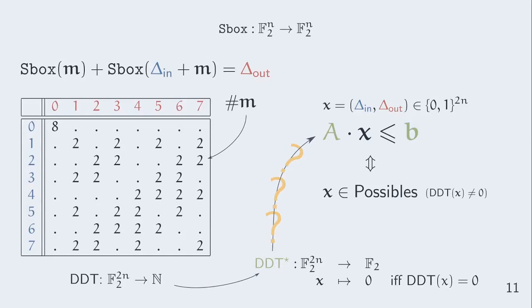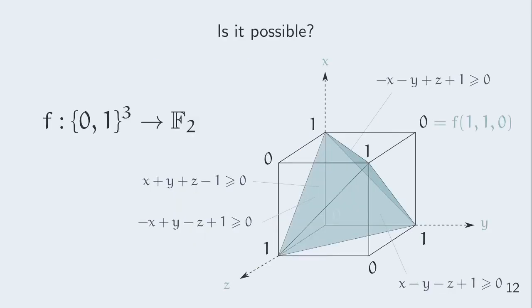Now the question is how can I derive a set of affine linear inequalities on binary variables x that is satisfied if and only if the two times n binary variables x model a possible transition. Please note that if I can do it for any boolean function, then I can do it for DDT star. A preliminary question is, is it possible for any boolean function to find such a set of inequalities?